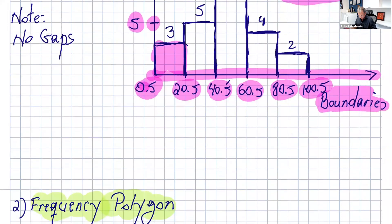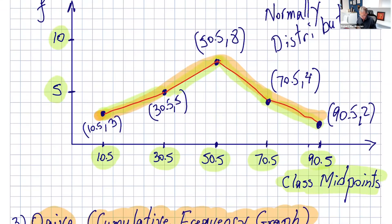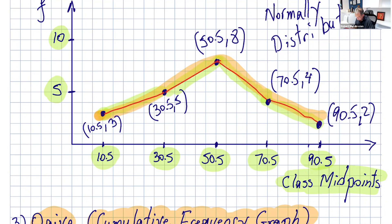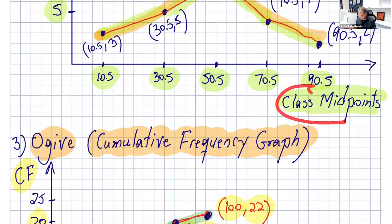Then you can make the frequency polygon. For the frequency polygon, you use the class midpoints on the x-axis. We calculated those already. You plot the midpoints with their frequencies: (10.5, 3), (30.5, 5), (50.5, 8), (70.5, 4), (90.5, 2). Then you connect those dots, and it goes up and down, so you can also see the distribution of the data. One thing very important: for histograms, use the class boundaries; for the frequency polygon, use the class midpoints.